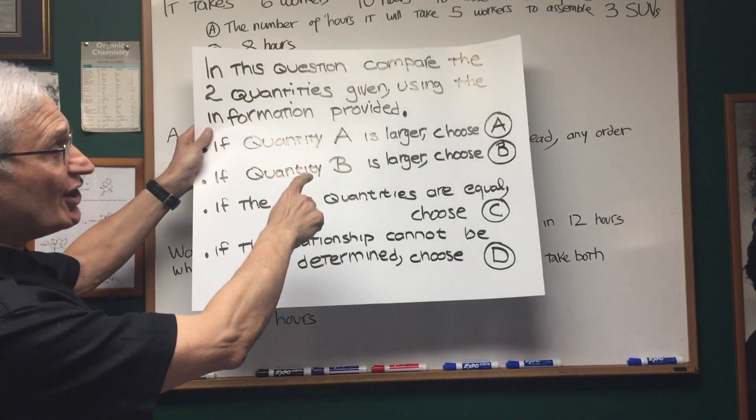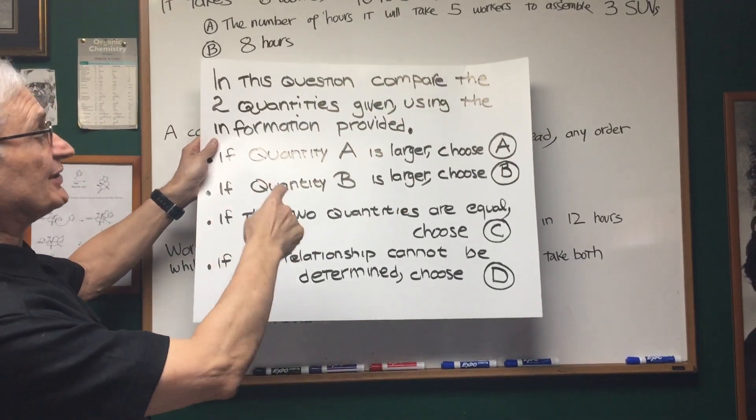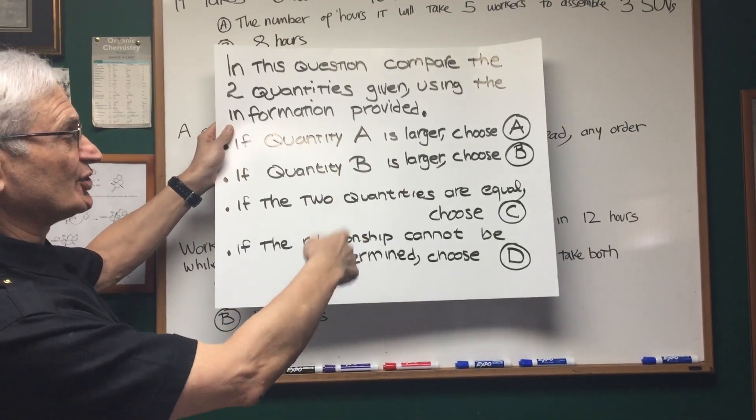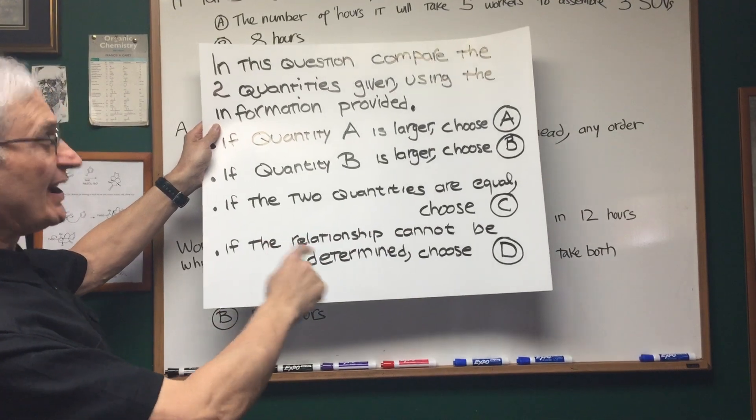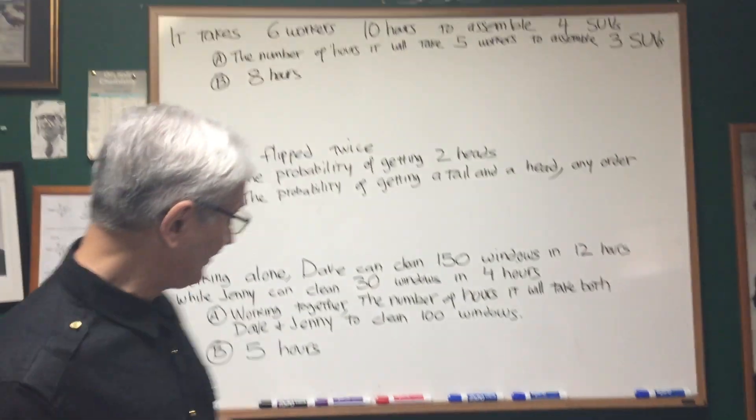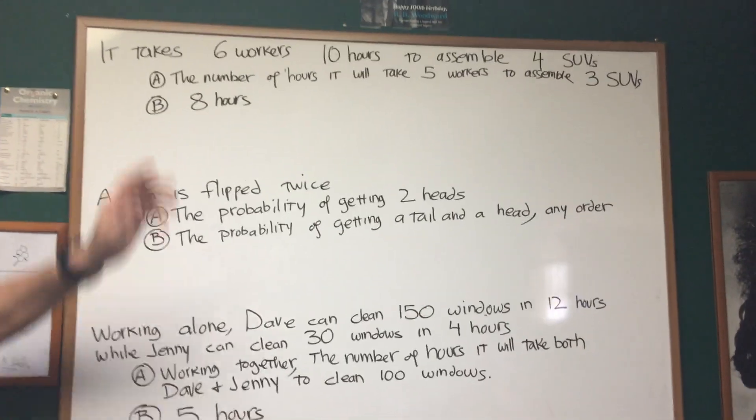If quantity A is larger, choose A. If quantity B is larger, choose B. If the two quantities are equal, choose C. If the relationship cannot be determined, choose D. All right, so let's go right into this problem right here, the first of these. Let's read it together.